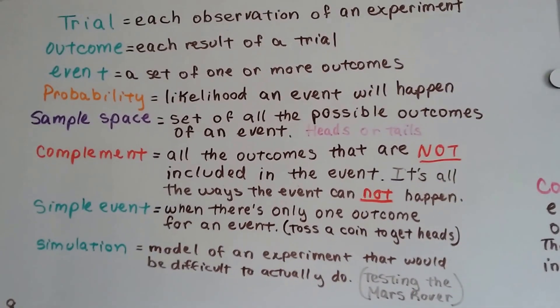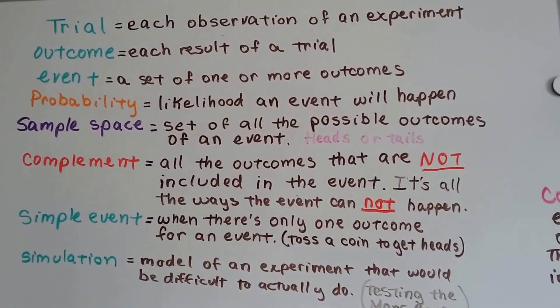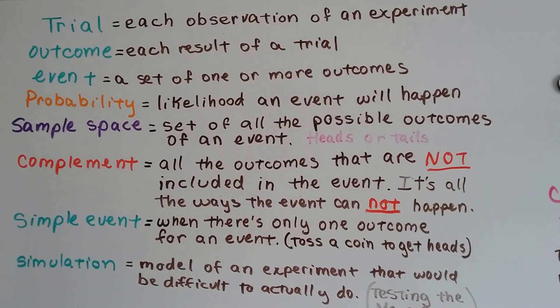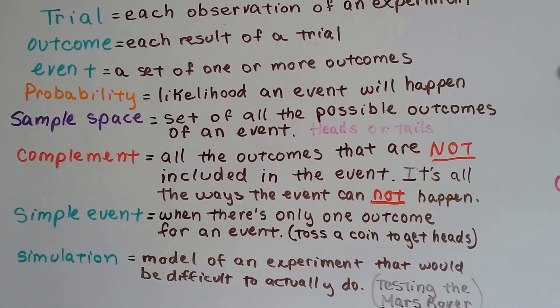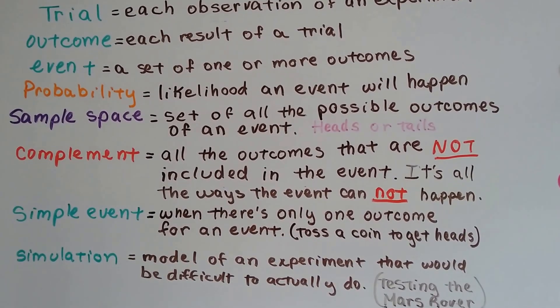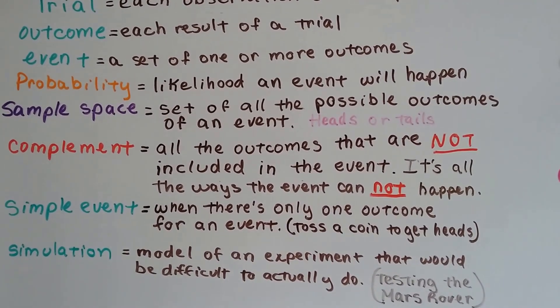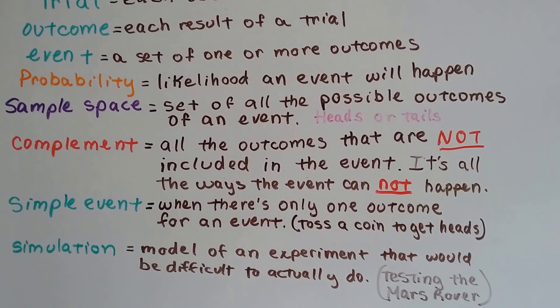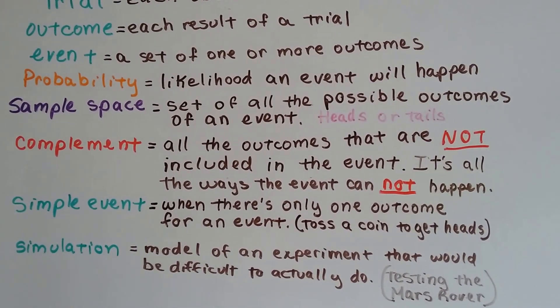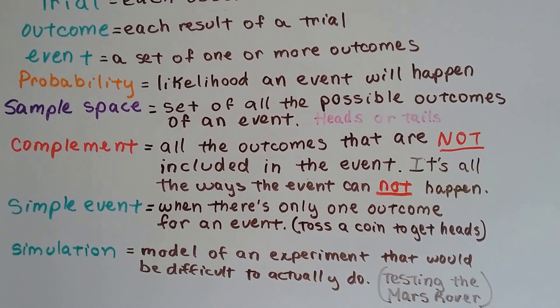A trial is each observation of an experiment. The outcome is the result of the trial. An event is a set of one or more outcomes. Probability, that's the likelihood that the event will even happen. A sample space is the set of all the possible outcomes of an event. So for flipping a coin, it would be heads or tails. Those are the only two choices. That's our sample space.